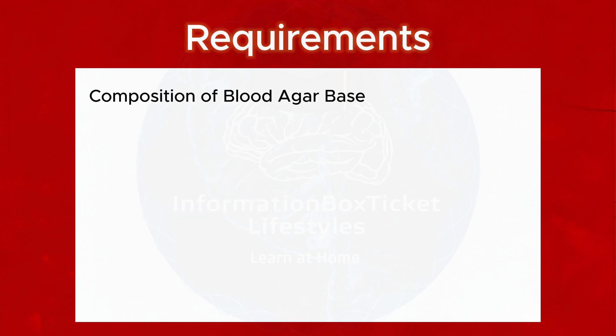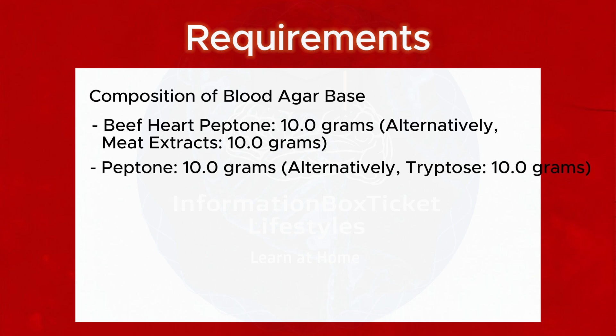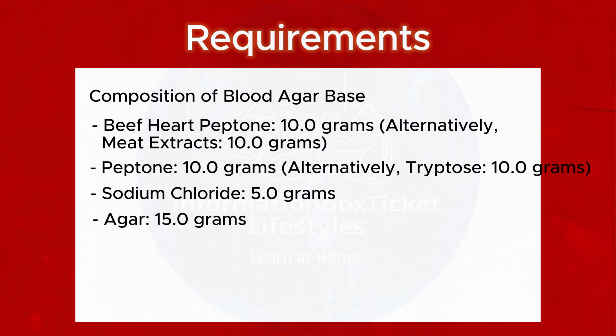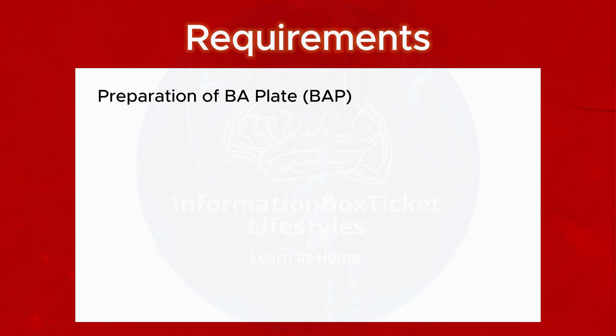Composition of blood agar base: Beef heart peptone 10.0 g (alternatively, meat extract 10.0 g), Peptone 10.0 g (alternatively, tryptose 10.0 g), Sodium chloride 5.0 g, Agar 15.0 g. Final pH 7.3 ± 0.2 at 25°C.